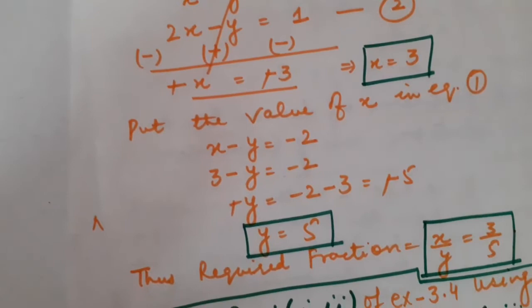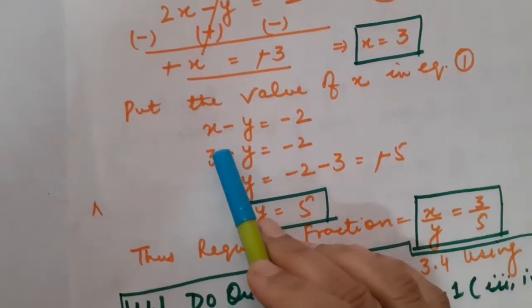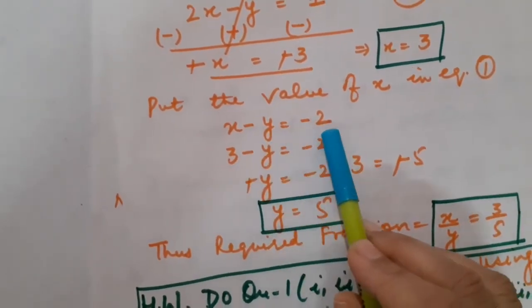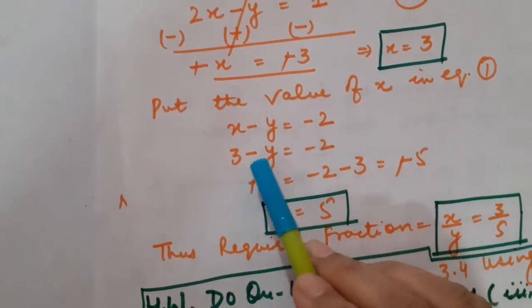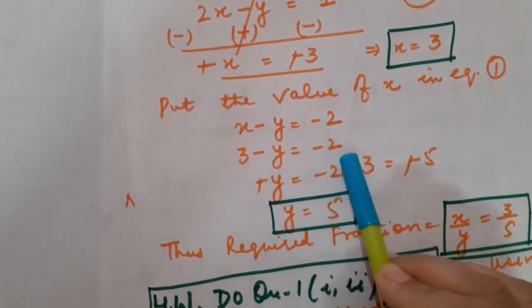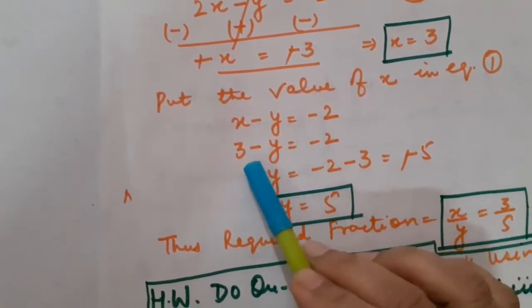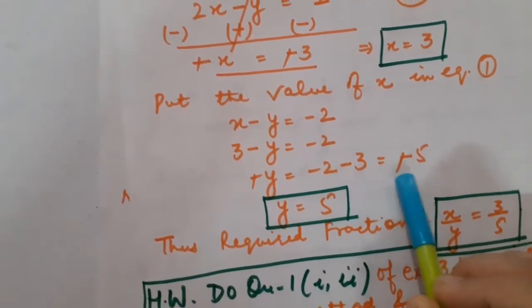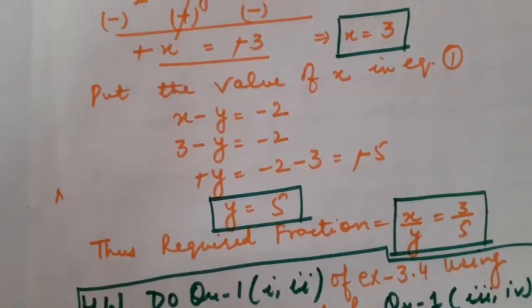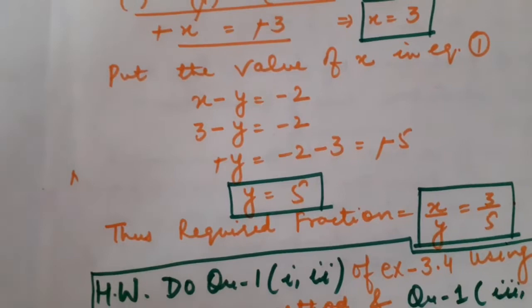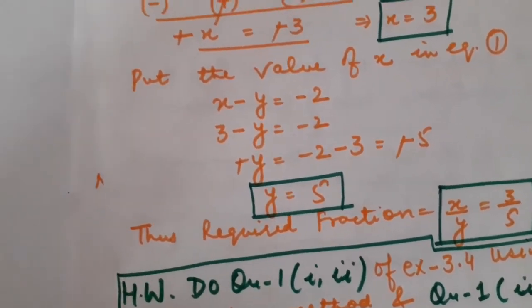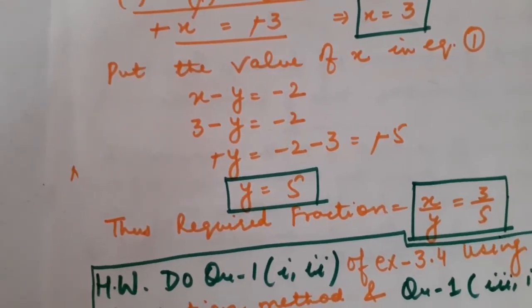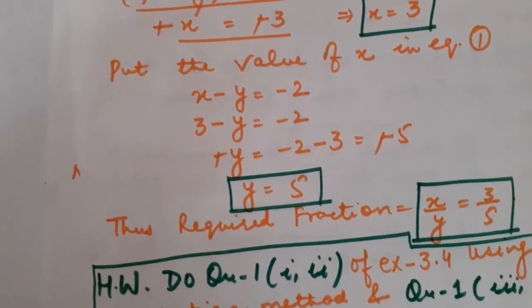Now put this value of x in equation number 1: x minus y equals minus 2. So 3 minus y equals minus 2, giving minus y equals minus 2 minus 3, which is minus 5. Therefore y equals 5. The required fraction is x upon y, which is 3 upon 5.